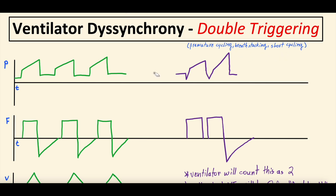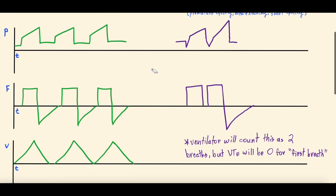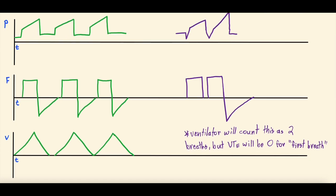The way we diagnose double triggering is using the scalars on the ventilator — particularly the pressure-time scalar, with pressure on the y-axis and time on the horizontal axis, the flow-time scalar, or the volume-time scalar. It's always important to note what ventilator mode you're in. For this discussion, we're going to be in volume control mode, where you choose the tidal volume being delivered rather than pressure control mode.